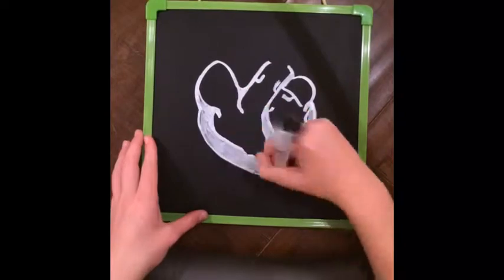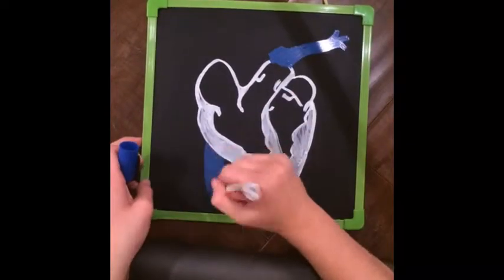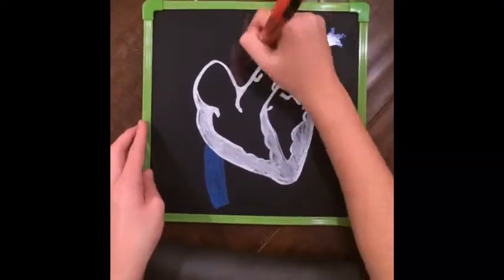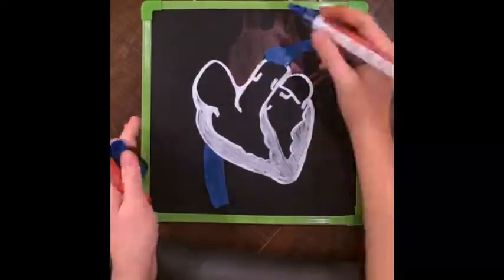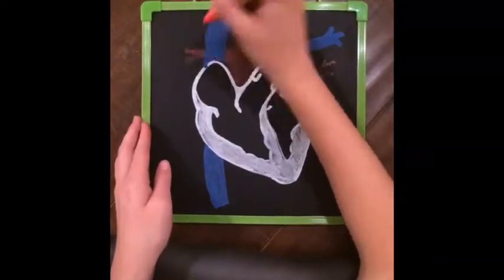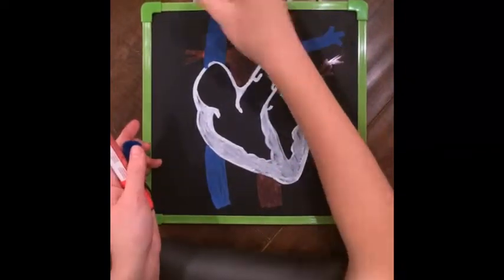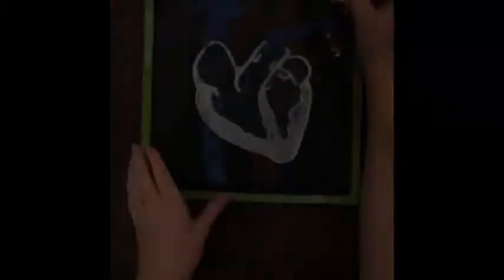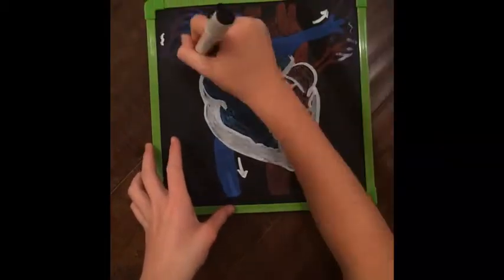Blood is carried away from the heart through arteries. Next in line are the capillaries, which connect the arteries to veins and let materials pass through the blood through capillary walls. Once blood is transferred to the veins, the blood travels back to the heart to start the process again, transporting nutrients, oxygen, waste, and other materials along the way.